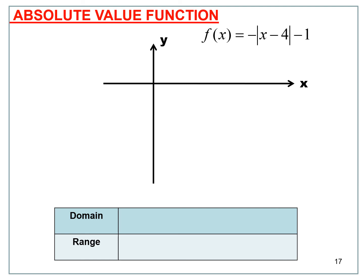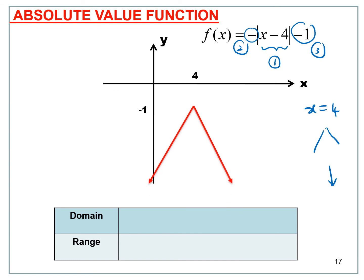For f(x) = -|x - 4| - 1, there are three things to note. First, set x - 4 = 0 to get x = 4 as the axis of symmetry. Second, the negative sign gives an inverted V-shape. Third, the -1 shifts the graph 1 unit below, giving a vertex at (4, -1). The domain is negative infinity to infinity and the range is negative infinity to -1.